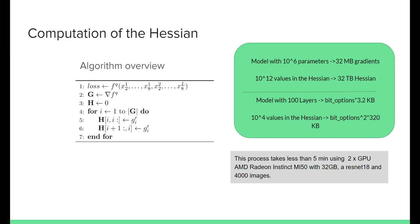Instead of depending on the number of parameters (which makes storing the full Hessian impossible for a layer with 10^6 parameters), we now depend on the number of layers and bit options. In a network with 100 layers this is clearly much smaller. As an illustrative example, we can compute the Hessian of a ResNet-18 with two GPUs in roughly five minutes — it's feasible.